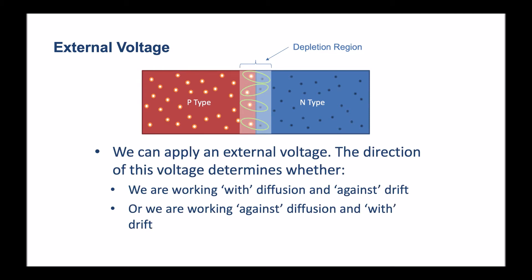We can apply an external voltage to the p-n junction. The direction of this voltage determines whether we are working with diffusion and against the drift, or we are working against diffusion and with the drift. Let's look at some examples.